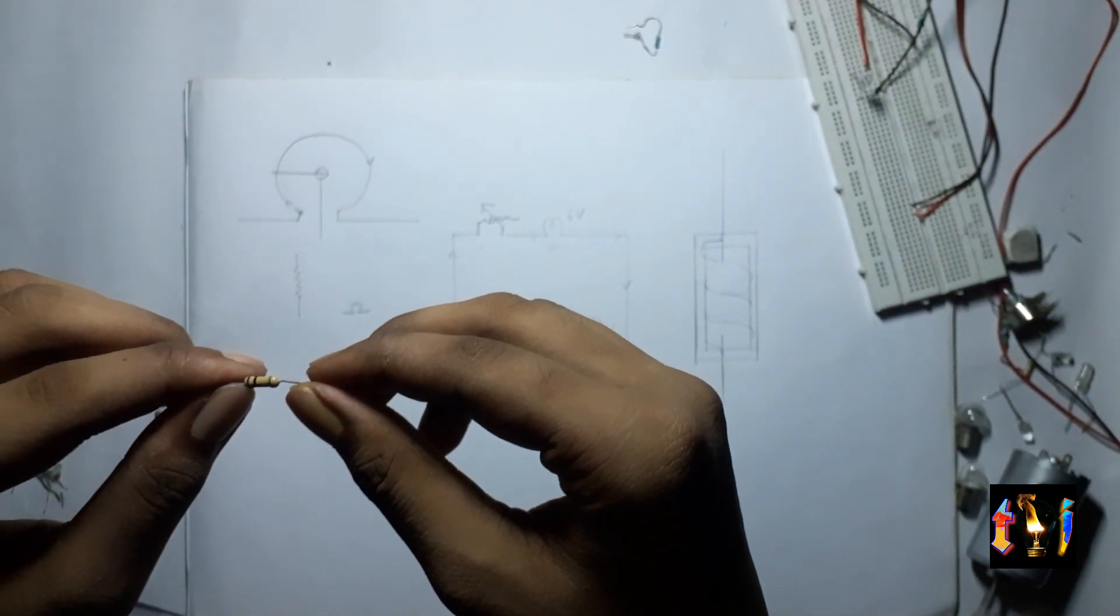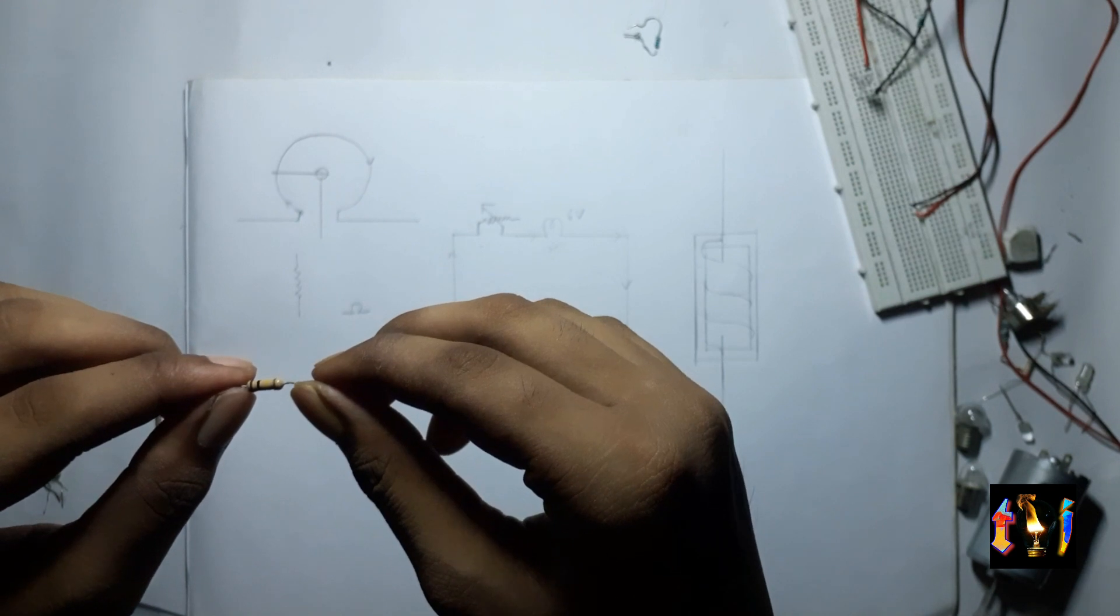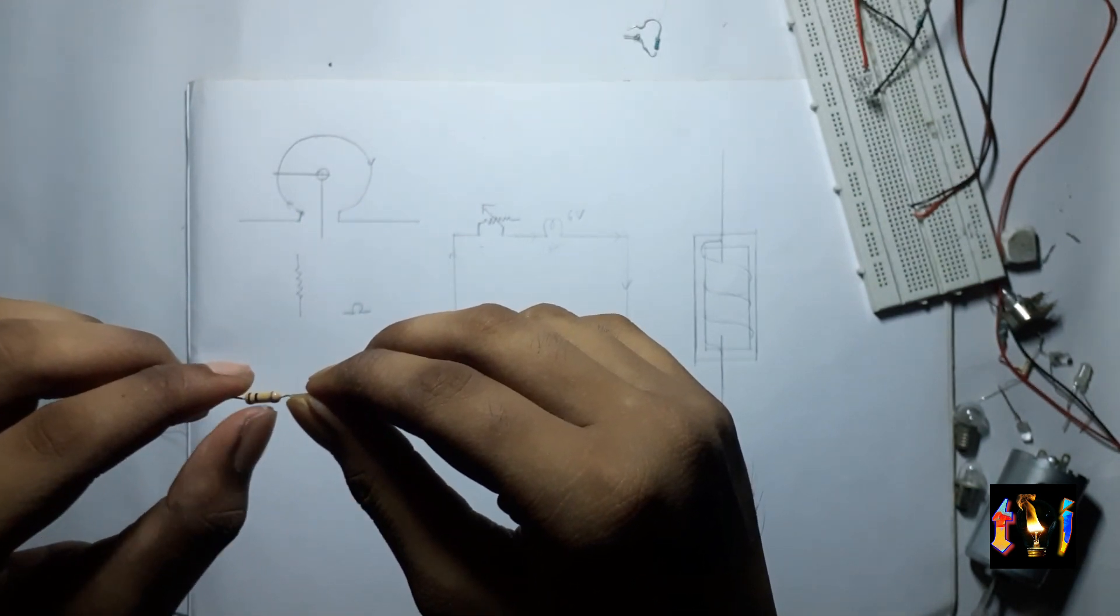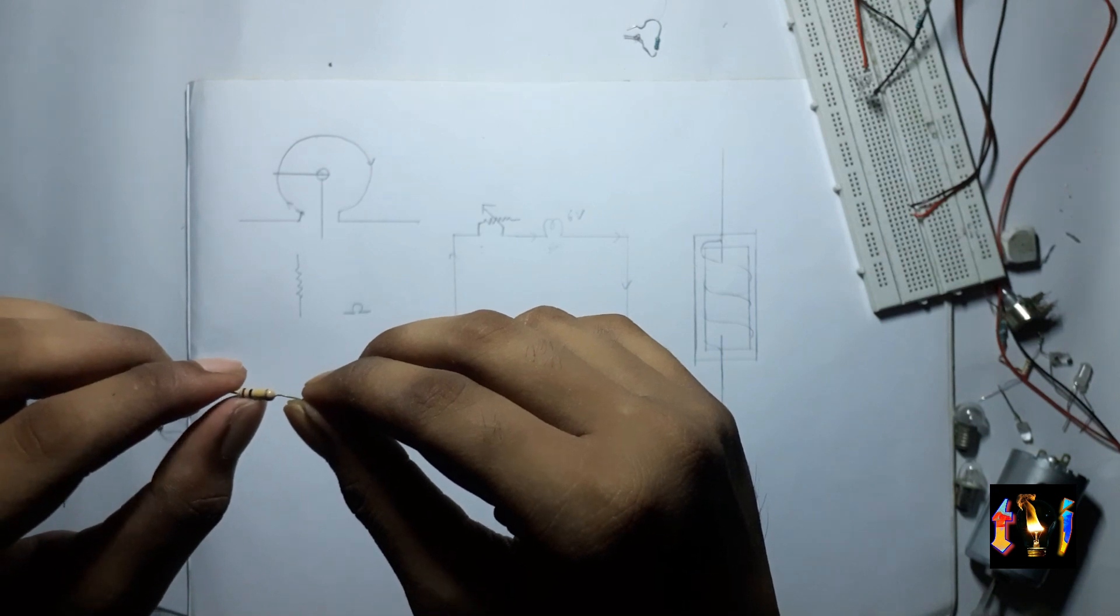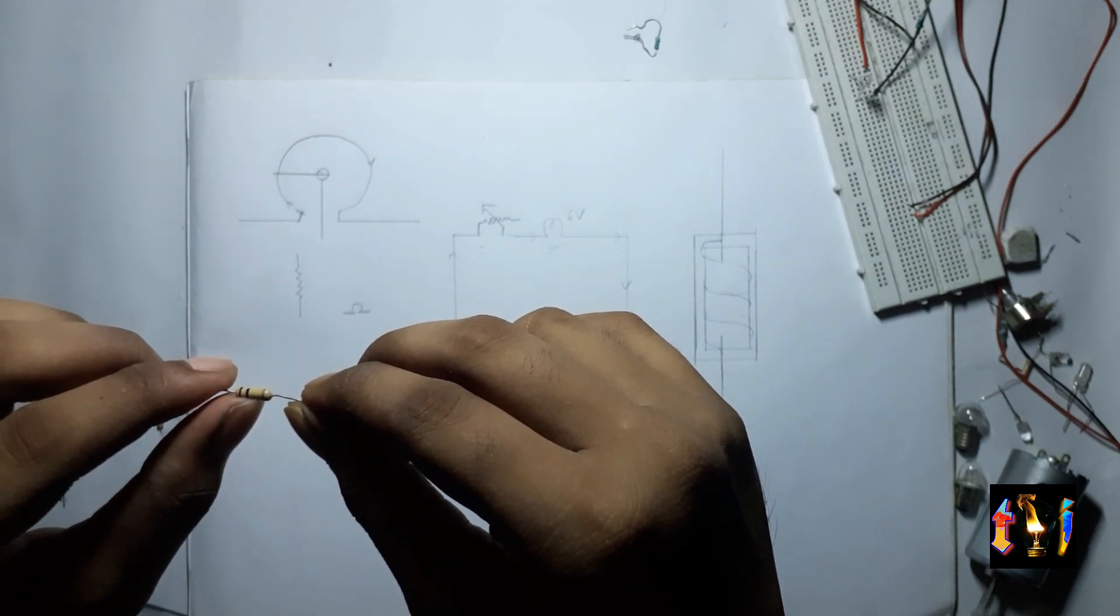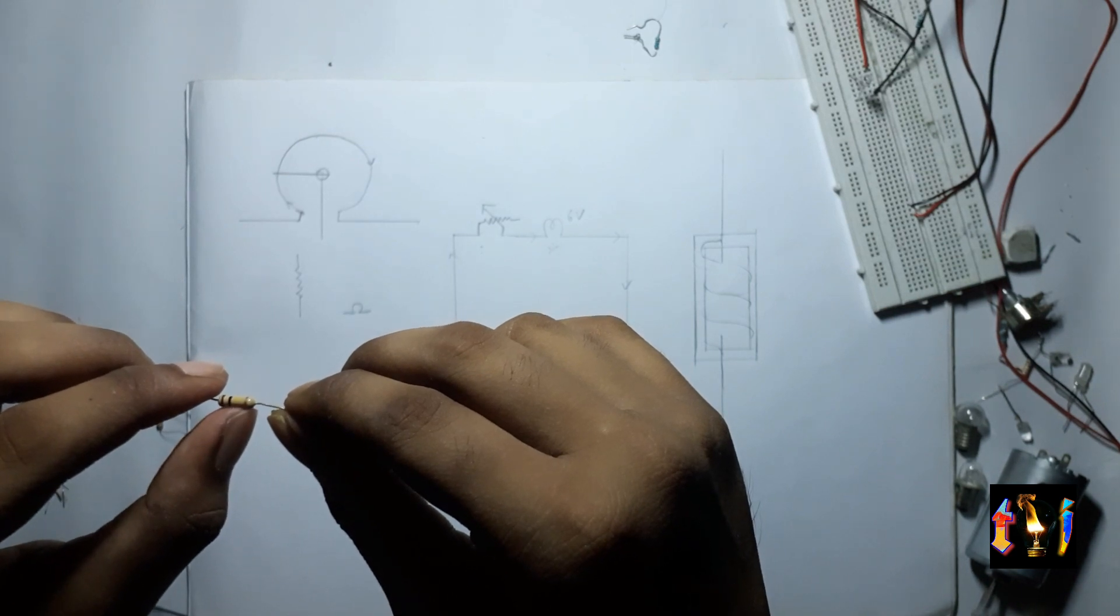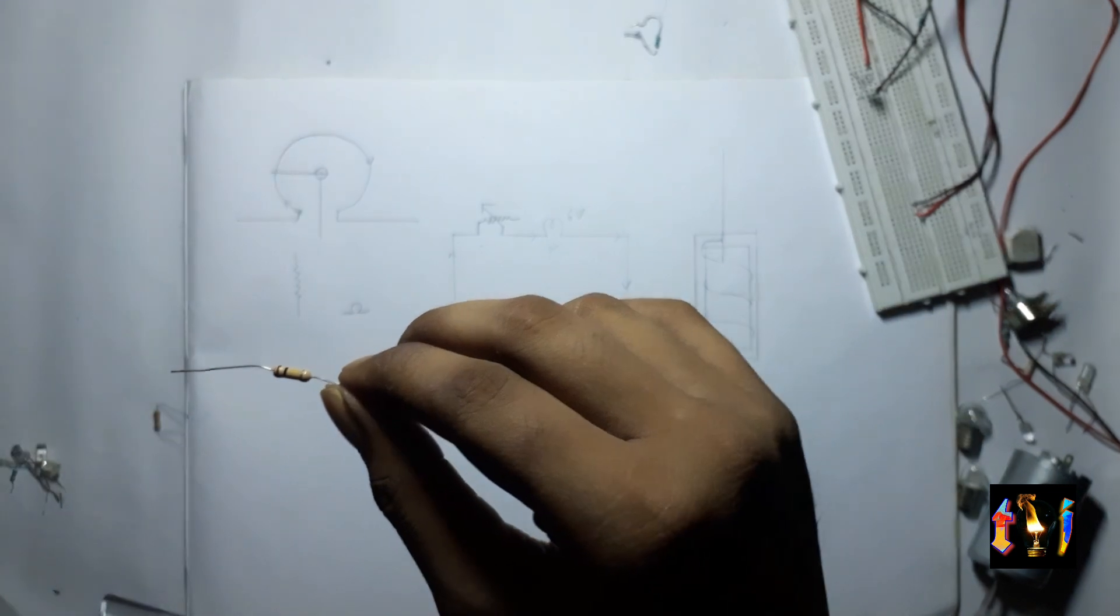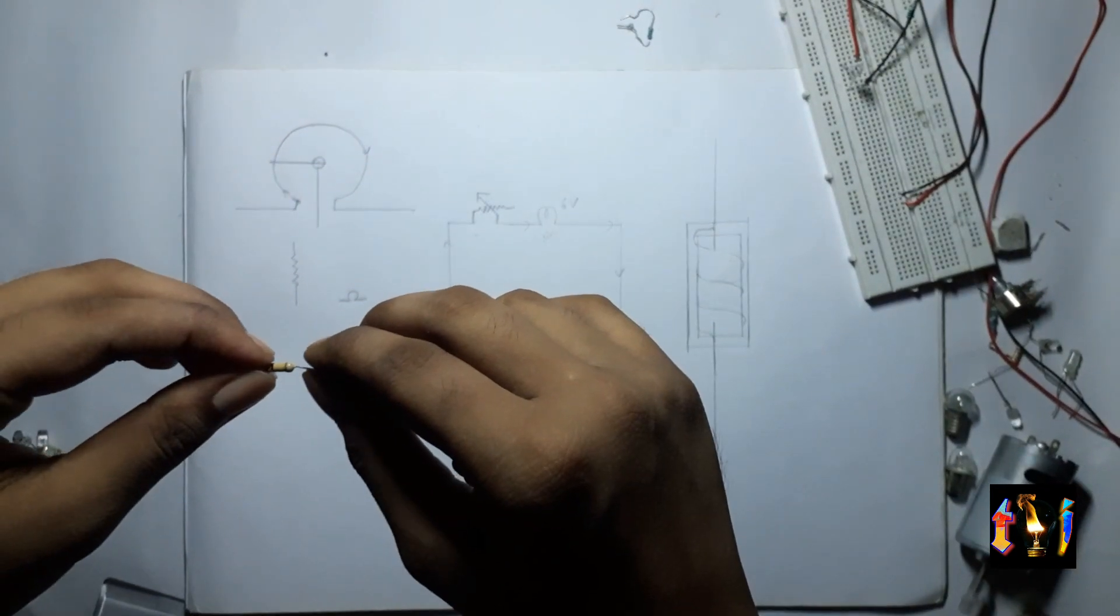So the first one resembles one, the second one black resembles zero and the third one resembles the multiplier three zeros and the fourth one resembles its tolerance. This is plus minus 10 percent in this case.